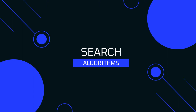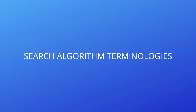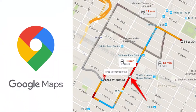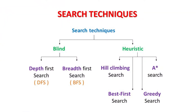Search algorithms are one of the most important areas of artificial intelligence. This video series will explain all about search algorithm terminologies. We will come to know how the AI solves search problems like finding the best path for a user in Google Maps. We will learn about some of the famous search algorithms and we will also implement them using JavaScript.